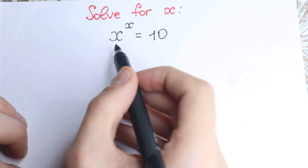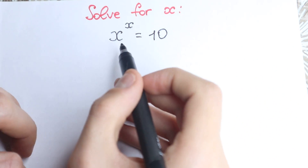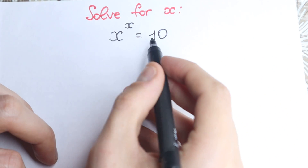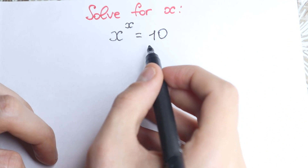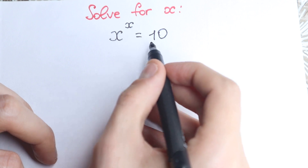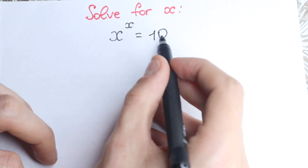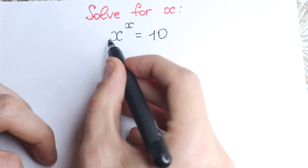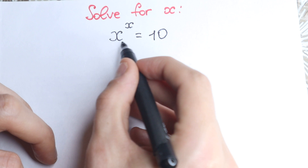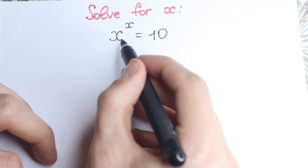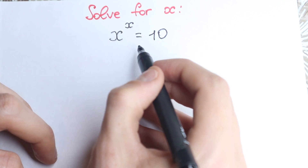Really interesting question today — we have an exponential equation x to the power x equal to 10. On the first side this looks like a very simple equation; we have our constant on the right hand side and we have our exponent part with our variable on the left hand side.